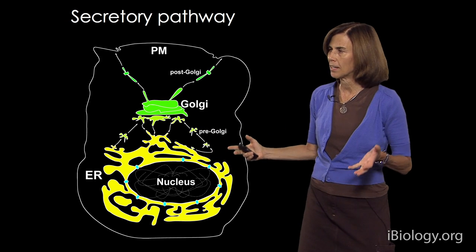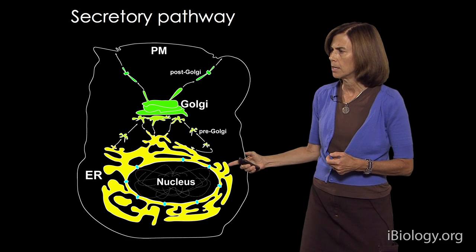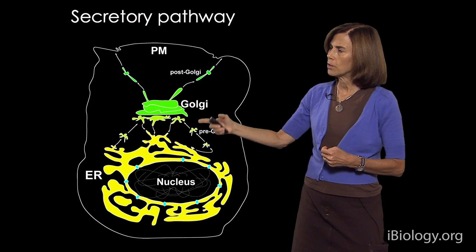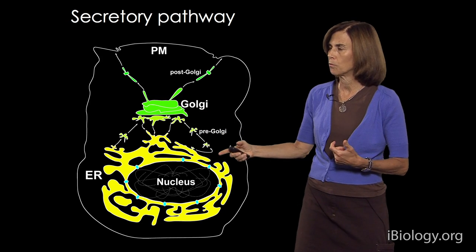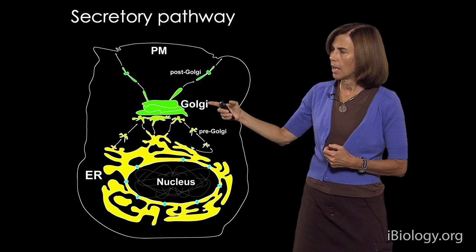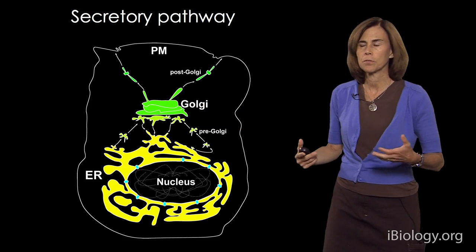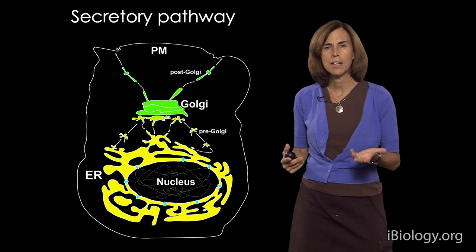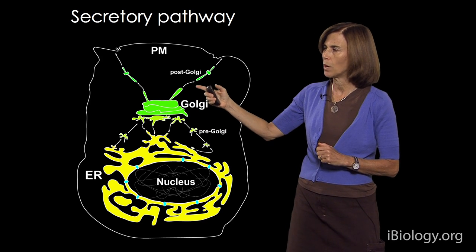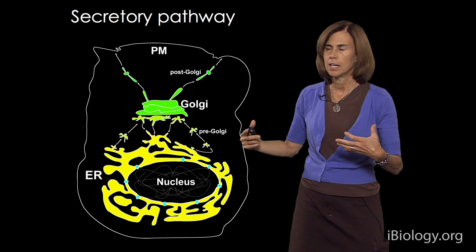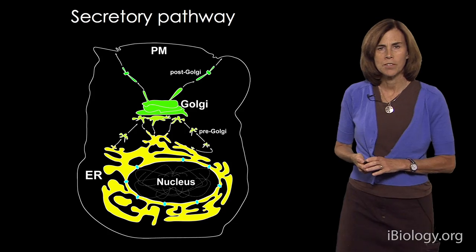Newly synthesized proteins that enter the secretory pathway do so at the level of the endoplasmic reticulum, where they get processed and folded. They're then transported to the Golgi apparatus through small vesicular tubular carriers, where they meet up with a variety of different enzymes that can process these proteins. Ultimately, the proteins then move into a different set of carriers that ferry them to the plasma membrane or to other final destinations within the cell.